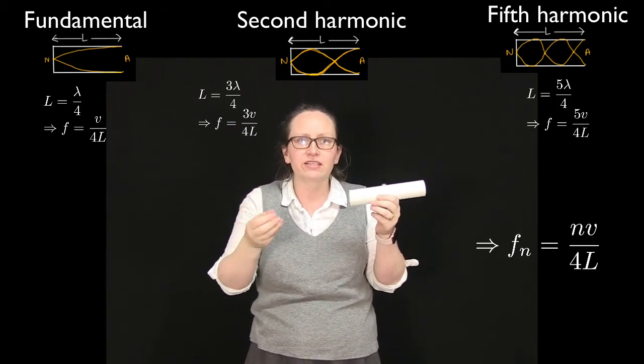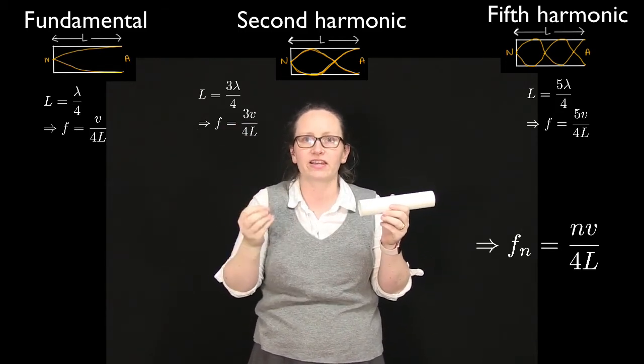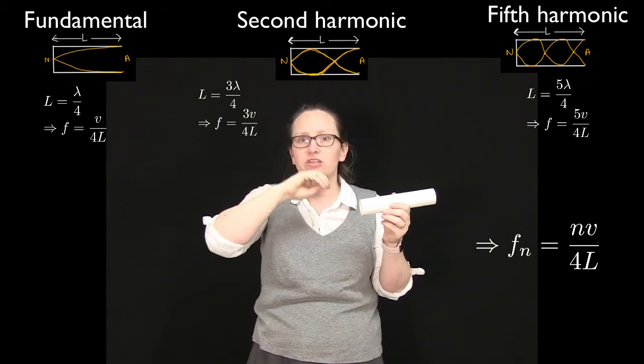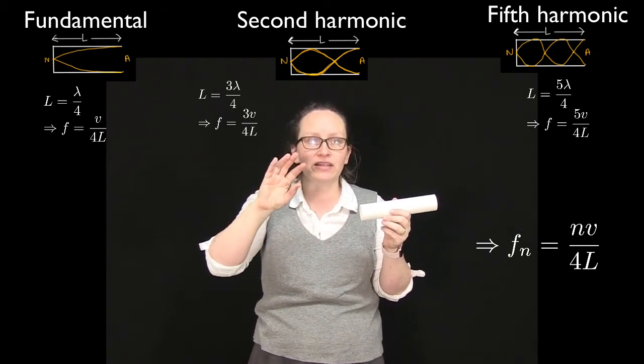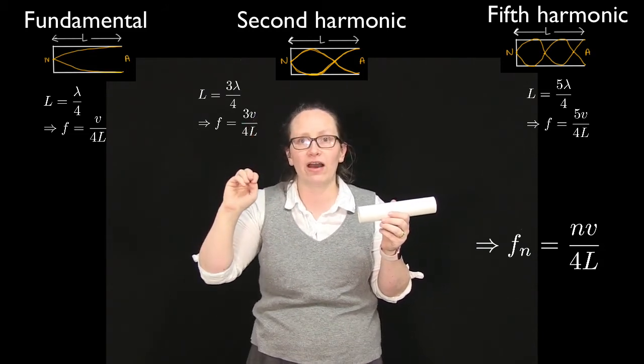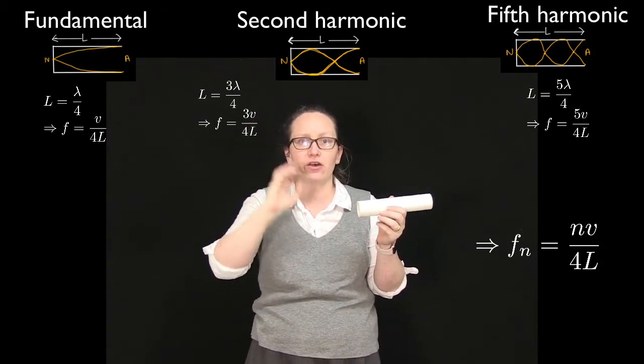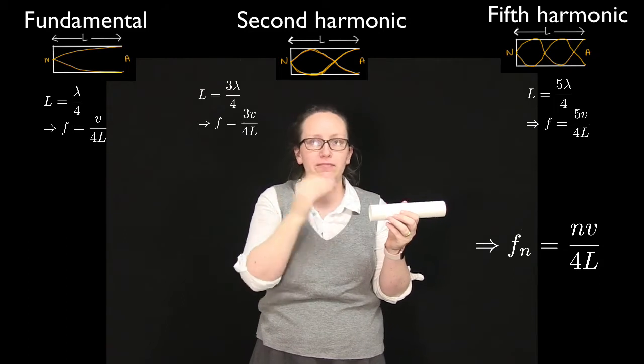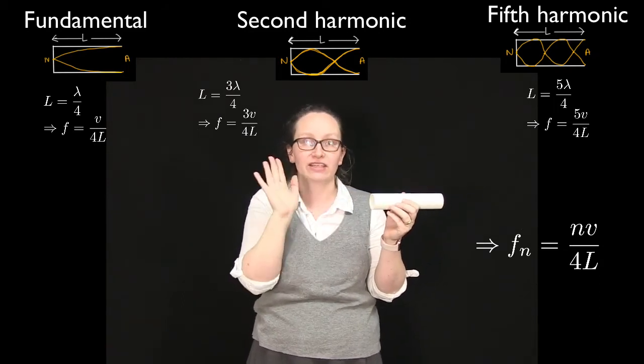The frequencies for the harmonics are given by f_n. So the frequency of the nth harmonic is equal to n times v over 4L, where v represents the speed of the wave through the pipe. So in this case it's the speed of sound in air.